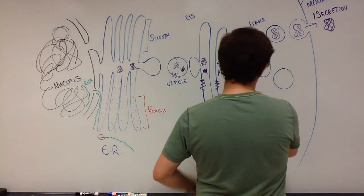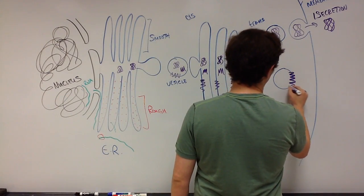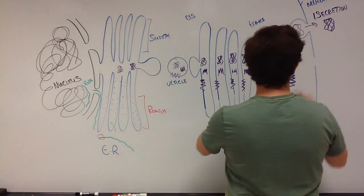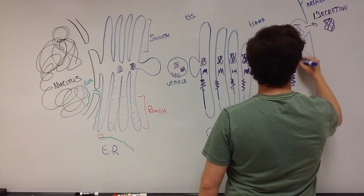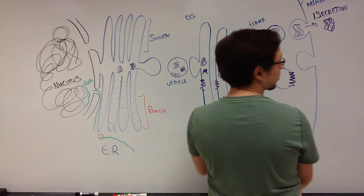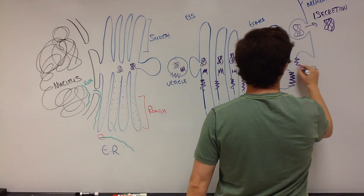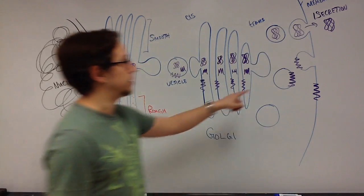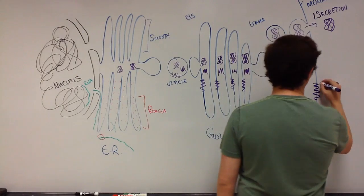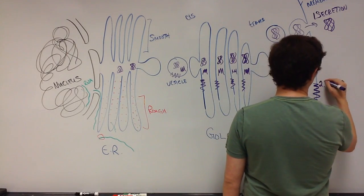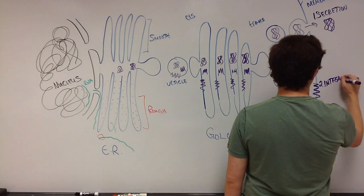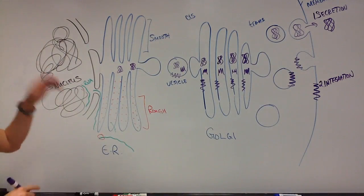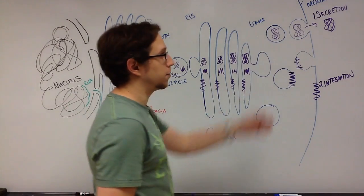In the second instance we're going to take this one here. That vesicle with that protein is going to fuse with the plasma membrane just like the one did for secretion. That protein is going to be integrated into the membrane. So the second potential fate is integration where we get a transmembrane protein in the membrane of the cell.